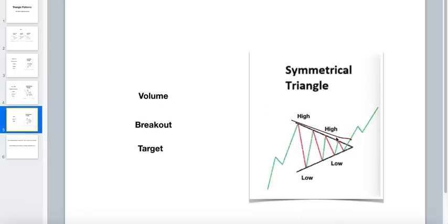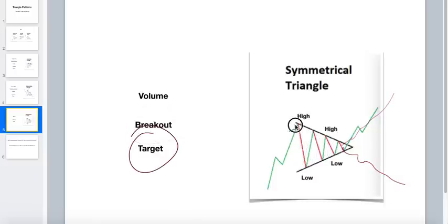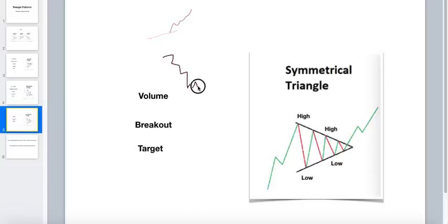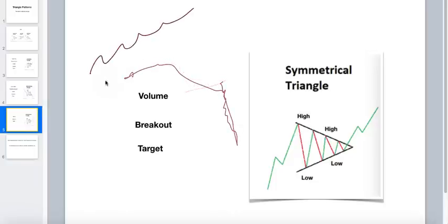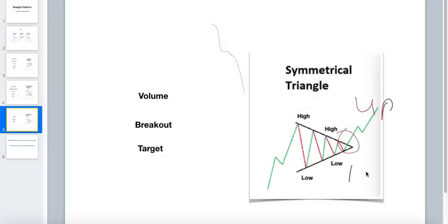The last one is the symmetrical triangle. In symmetrical, both sides are shrinking — your support is going up and your resistance is also coming down, so you're getting pressure from both sides. Volume will always be low, getting lesser and lesser. The breakout can go in either direction — up or down — so be careful. If the stock was in an uptrend before the pattern, you expect an upside breakout. If it was falling, you expect a downside breakdown.